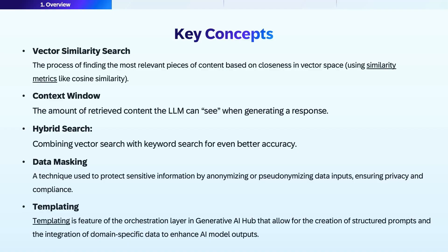Since the LLM is now able to leverage augmented text, which is mostly internal organizational content, you may want to protect sensitive information by anonymizing or pseudo-anonymizing inputs to ensure privacy and compliance. Data masking is an important consideration. The data masking feature is available in the Generative AI Hub orchestration layer, which helps you protect your sensitive information.